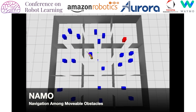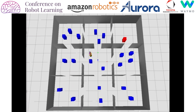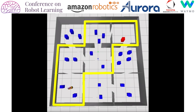For example, consider the NAMO — Navigation Among Movable Obstacles — domain. The agent must reach the red object, moving obstacles along the way. If the agent imposes a state constraint that forbids itself from entering certain rooms, then it no longer needs to consider plans that enter those rooms.